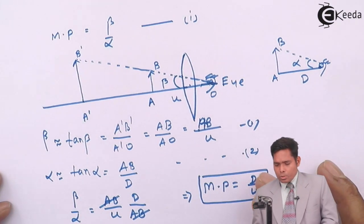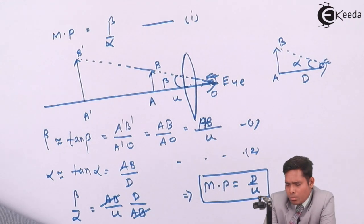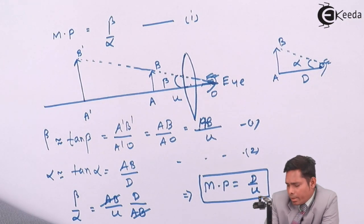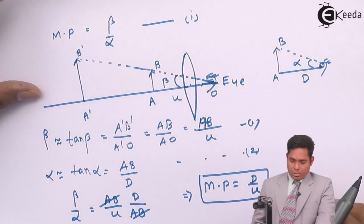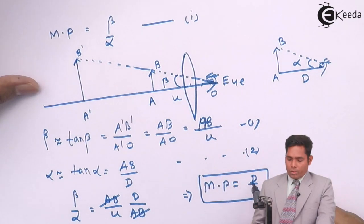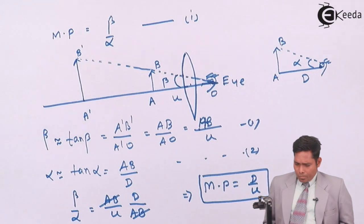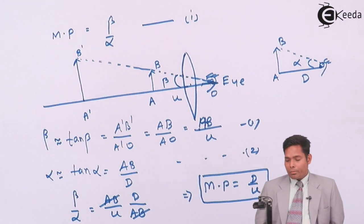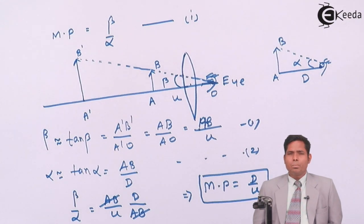We can also write this expression in terms of v and f, because we know the lens formula: 1/v minus 1/u equals 1/f. So we can use that as well — that will be discussed in the next class. We have discussed the magnifying power of a simple microscope as M = D/u. If you apply the sign convention, both D and u are negative, so the magnifying power comes out to be positive.